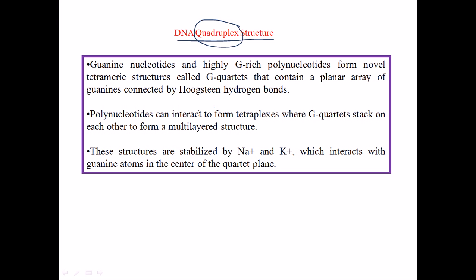As we know from the previous discussion about the triple helix, involving three strands together is very, very difficult. Now we are involving four strands to make bonds, so that will be much more difficult than the previous one because all the strand backbones are negatively charged, creating a tendency to repel those charges.